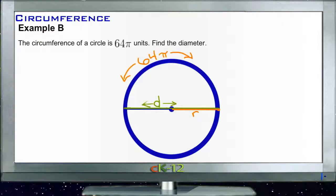Okay, example B. The circumference of a circle is 64 pi units. Find the diameter. So our circumference is our distance around, that's 64 units. We want the diameter, which is the distance across. So remember our little shape says that circumference is pi times the diameter.